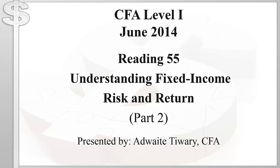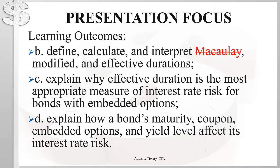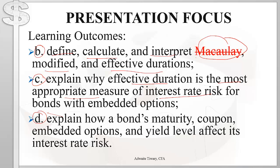We'll be focusing on learning outcomes B, C, and D of the reading. In the previous video we already saw the Macaulay duration. In this video we'll define, calculate, and interpret the modified and effective duration, explain why effective duration is the most appropriate measure of interest rate risk for bonds with embedded options, and explain how different factors such as maturity and coupon rate affect a bond's interest rate risk.